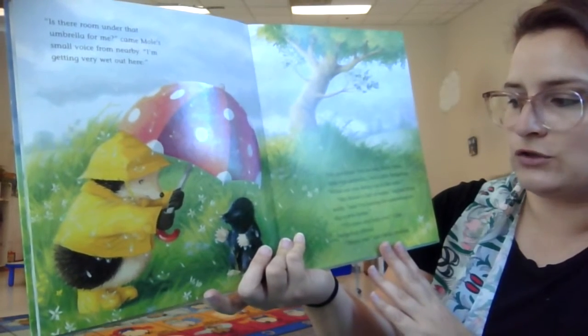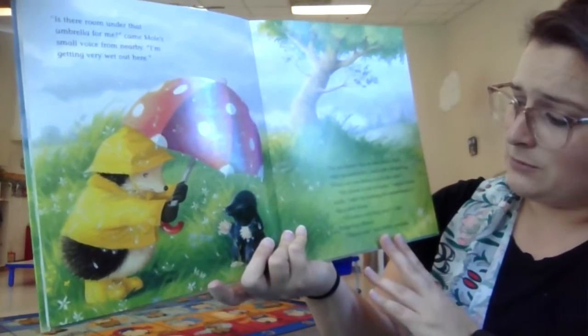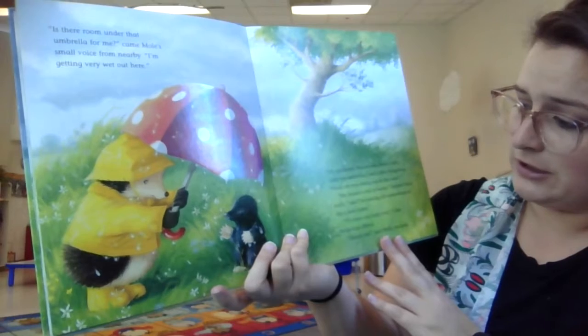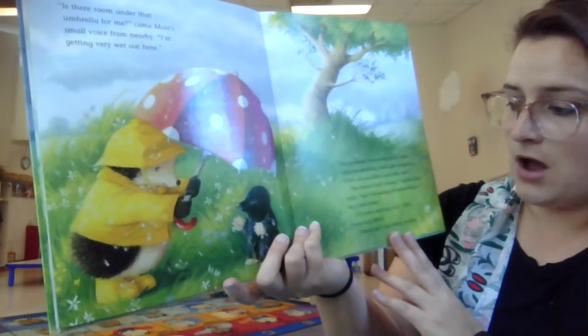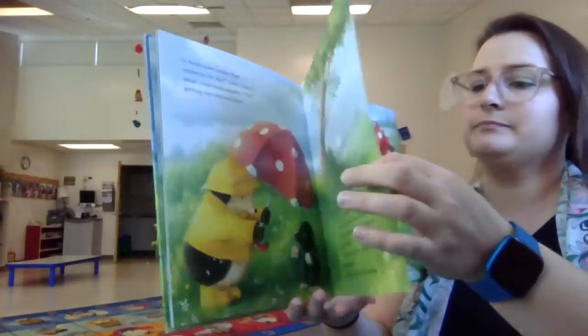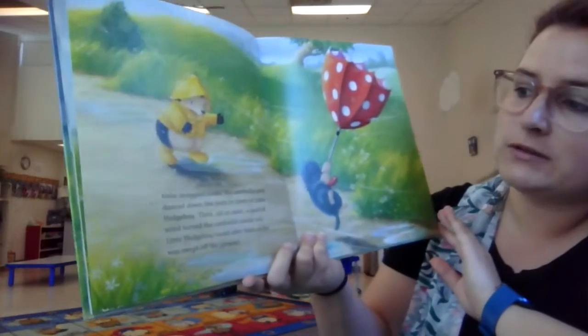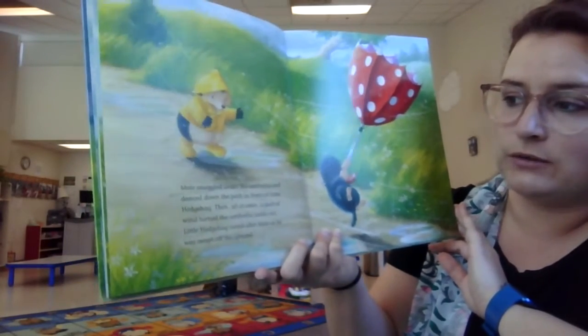What are you doing out here in the rain? My house is full of water, replied Mole sadly. I'm looking for somewhere to dig a new home. I'll come and help you, little hedgehog offered. Thank you, said little Mole. Mole snuggled under the umbrella and danced down the path in front of little hedgehog.